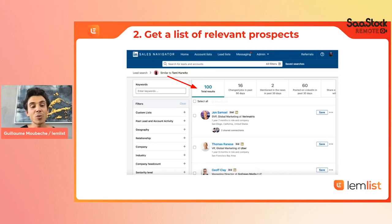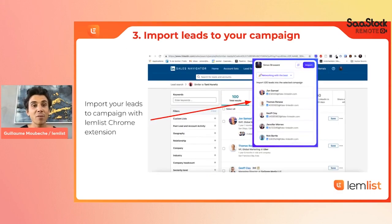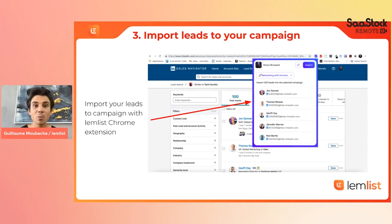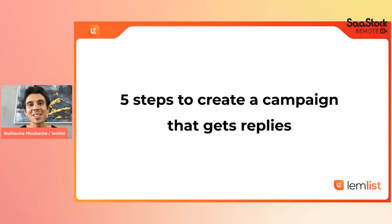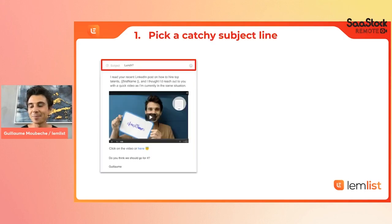Once you do that, you have 100 people. You just click on our extension to grab all those profiles, find their emails, and send them into a campaign. Once you do that, you need to create the perfect campaign — what to write and what the different stages are.